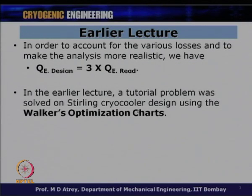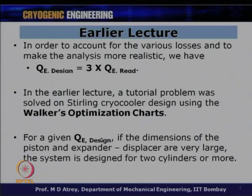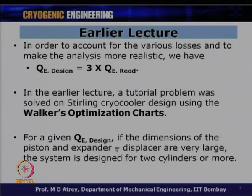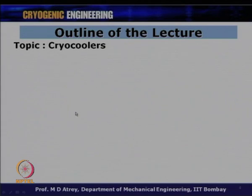In the earlier lecture, a tutorial problem was solved on Stirling cryocooler design using Walker's optimization chart. When we say design, we basically intend to calculate the diameter and stroke of the piston, and the diameter and stroke of the displacer. For a given QE design, if the dimensions come out very large, the system is designed for two cylinders or more — similar to how a four-cylinder automobile generates more power than a single-cylinder one.